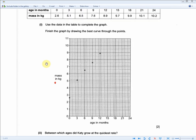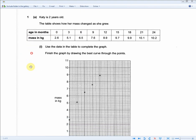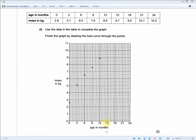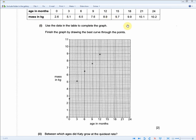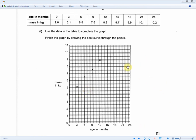We have another exam question about plotting the graph. So it tells us that Katie is two years old. The table shows her mass changed as she grew. So the age in months and the mass in KG. So the age running along in intervals of three months along the x-axis and on the y-axis is the mass in KG. You're told to use the data in the table to complete the graph. Finish the graph by drawing the best curve through the points. So basically plot the graph and then draw a line of best fit for two marks. So one mark for completing the next four points and one mark for drawing the line of best fit.